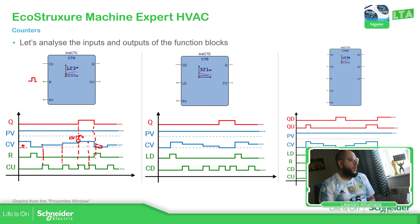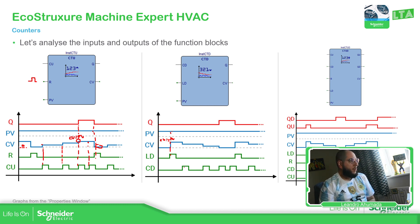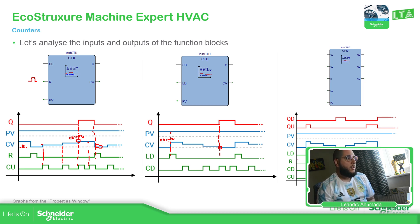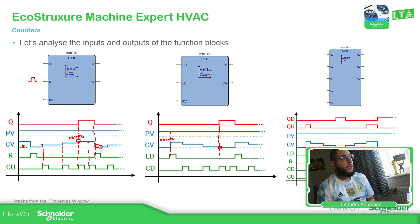For counter down, you can see the load — it will move the PV to the CV value. So this point is equal, and then every time I send a pulse it decreases the counter value by one. When it reaches zero, Q is activated, meaning that we reached the endpoint. And then CTUD is a combination of both — you load the value, reset is reset, and then you count up and down depending on what you have. You have two different outputs for up and down when you reach the respective values.